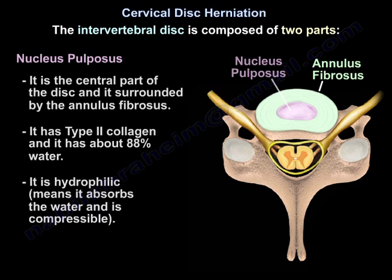The nucleus pulposus is the central part of the disc and it is surrounded by the annulus fibrosus. It has type 2 collagen and has about 88% water. It is hydrophilic, meaning it absorbs water. It is compressible.